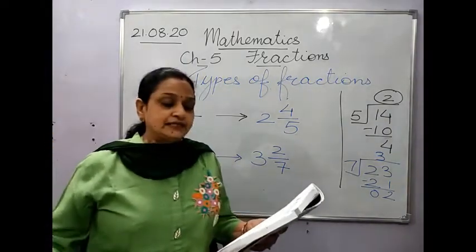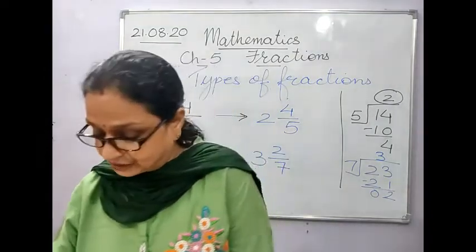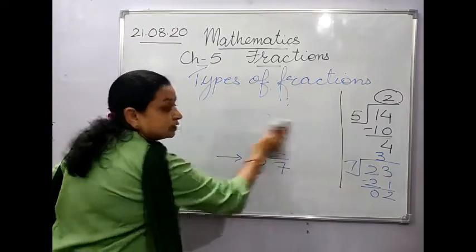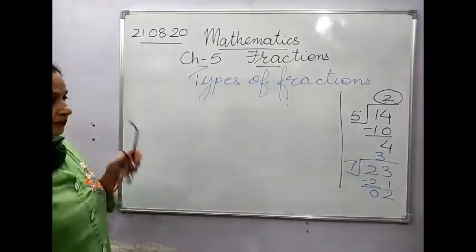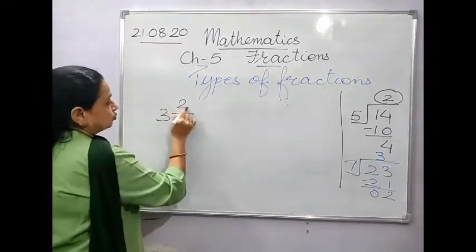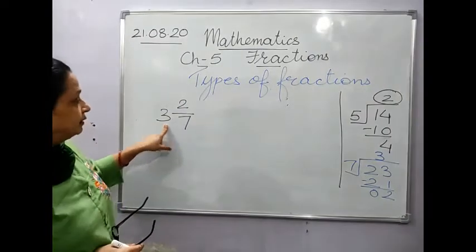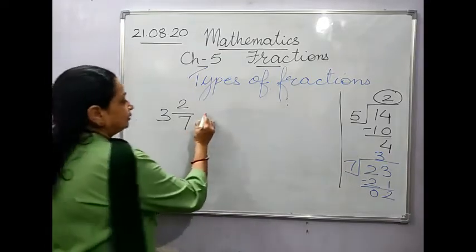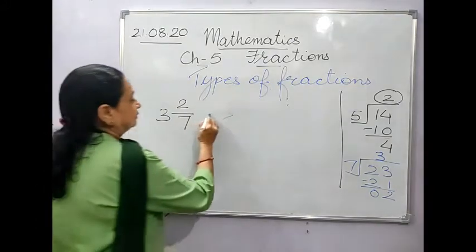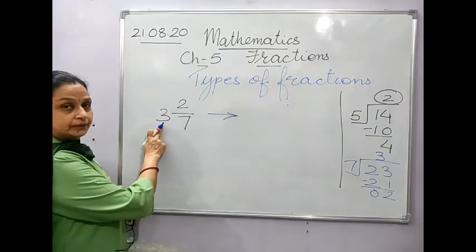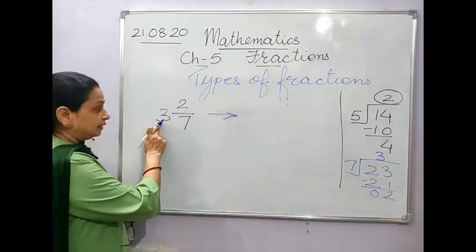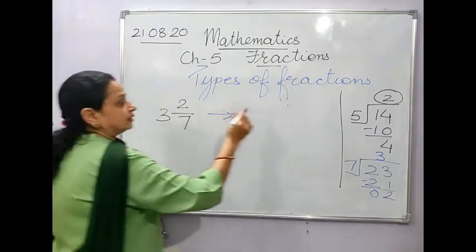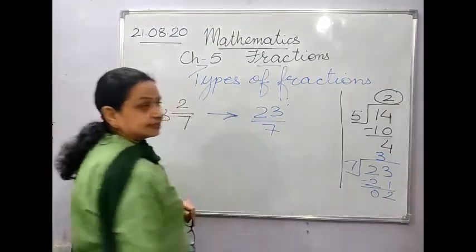The next topic is expressing a mixed fraction as an improper fraction — the reverse of what we just did. Suppose we take 3 and 2/7. This is a mixed fraction: 3 is the whole number and 2/7 is the proper fraction. You multiply the denominator by the whole number: 7 × 3 = 21, then add the numerator: 21 + 2 = 23. The answer is 23/7 and the denominator remains the same.